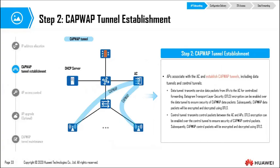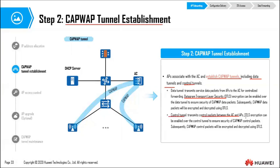During CAPWAP tunnel establishment, APs associate with the AC and establish data tunnels and control tunnels. Data tunnels forward data packets from APs to AC for centralized forwarding. Control tunnels transmit control packets between ACs and APs. Both tunnels use DTLS (Datagram Transport Layer Security) encryption to provide security.